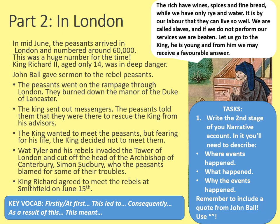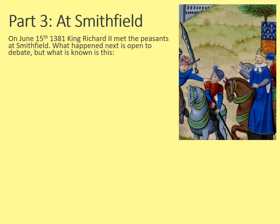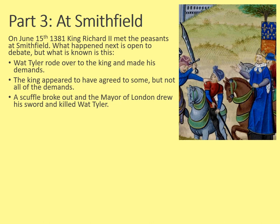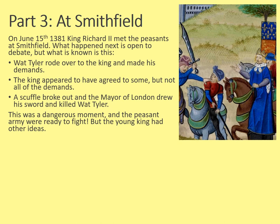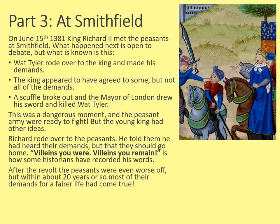We've seen how the peasants in Kent and Essex gathered, and how they rampaged through London — now we're going to see how the story ends. Part 3: At Smithfield. On June 15th 1381, King Richard II met the peasants at Smithfield. What happened next is open to debate, but what we know is this: Wat Tyler rode over to the king and made his demands. The king appeared to have agreed to some but not all of the demands. A scuffle broke out and the mayor of London drew his sword and killed Wat Tyler. This was a dangerous moment and the peasant army were ready to fight, but the young king rode over to the peasants, told them he heard their demands, and said they should go home — something along the lines of 'Villains you were, and villains you remain.' After the revolt the peasants were even worse off, but within 20 years or so most of their demands for a fairer life had come true under a new king.